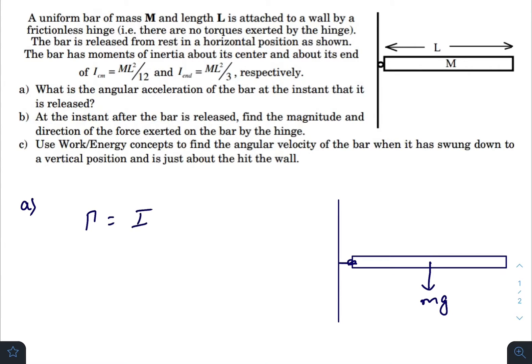So torque equals moment of inertia times angular acceleration. So alpha equals, the torque is mg times L by 2 divided by moment of inertia with respect to the end axis, mL squared by 3.